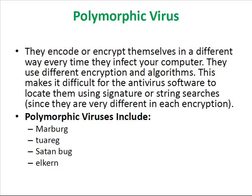Polymorphic virus. They encode or encrypt themselves in a different way every time they infect your computer, using different encryption algorithms. This makes it difficult for antivirus software to locate them using signature or string searches, since they are very different in each encryption. Polymorphic viruses include Marburg, Warreg, Satan Bug, and Elkern.